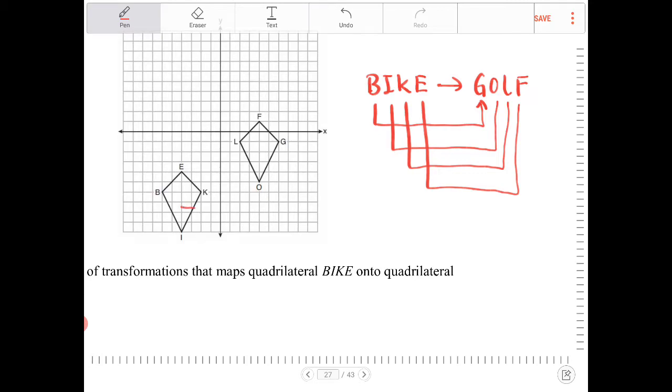as this is not a simple translation moving to the left and right. In order for us to map B-I-K-E onto G-O-L-F, there has to be a reflection that takes place.